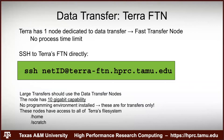The big difference between Grace and Terra is the data transfer node name. On Terra it's called the FTN — Fast Transfer Node. There's only one. There's no process time limit there. Unlike Grace's DTNs, you can connect to Terra's FTN directly without going through the login node first. The SSH command is: your NetID at tara-ftn.hprc.tamu.edu.